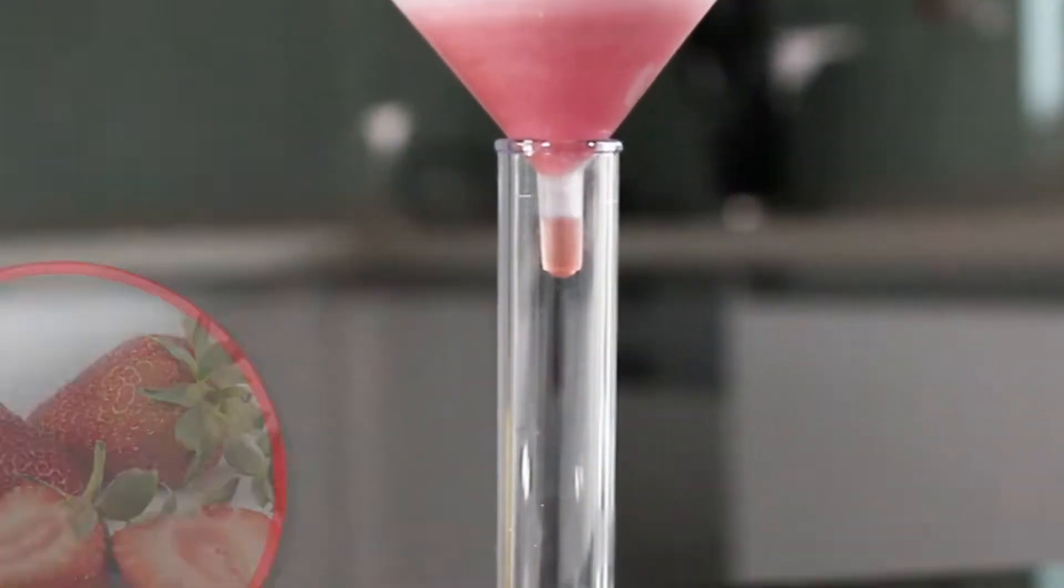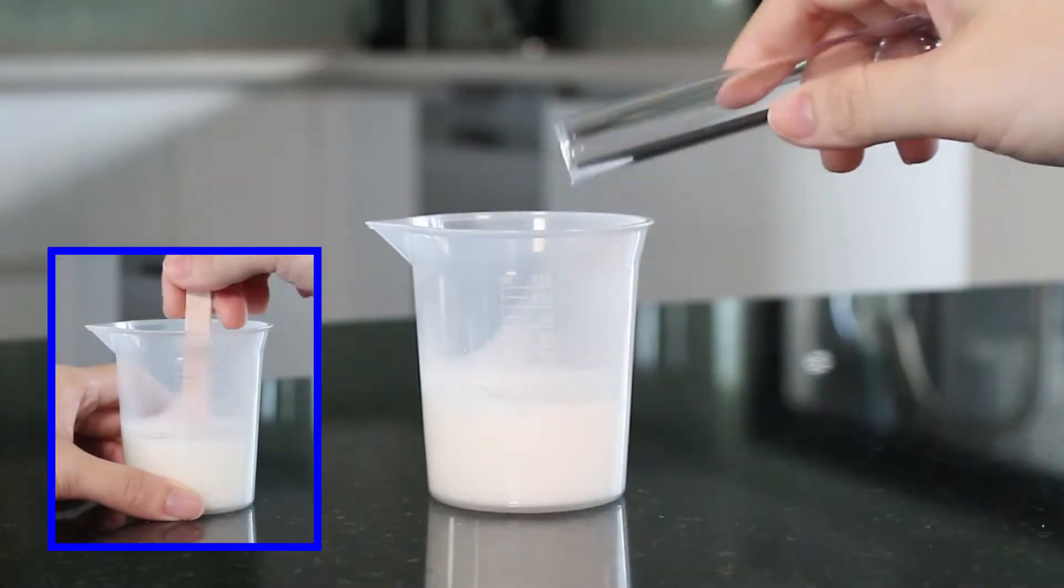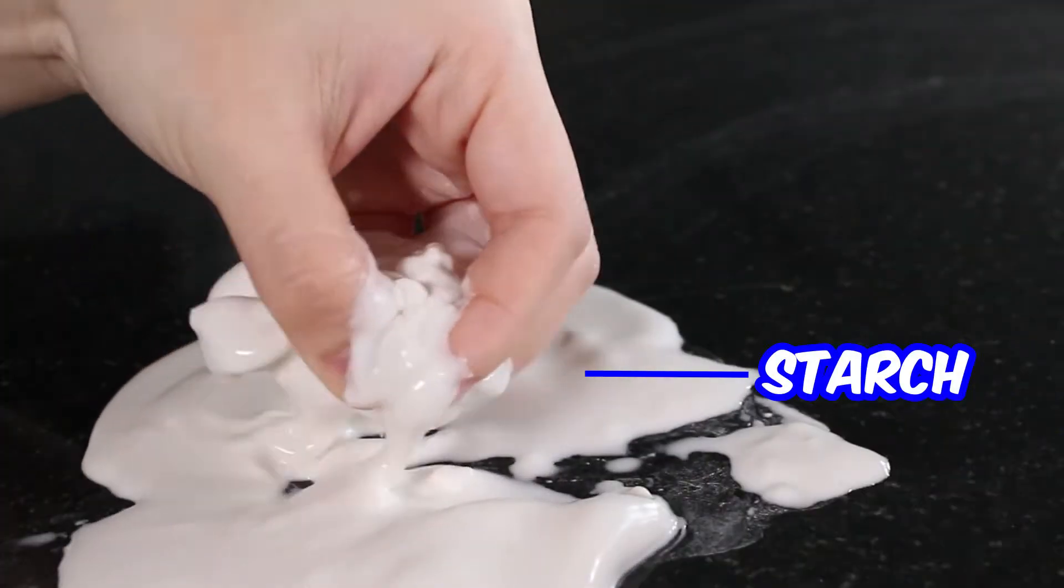Extract real DNA from strawberries. Extract protein from milk to make solid shapes and starch from a potato to make slime.